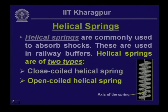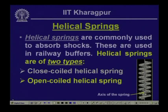Helical springs are commonly used to absorb shocks. For example, when a railway wagon comes into a platform and hits the buffer, it imparts energy onto the buffer. The buffer is provided with helical springs which absorb the shock. This is one example where helical springs are used, and there are of course other areas where they are applied.